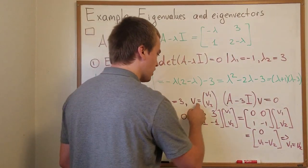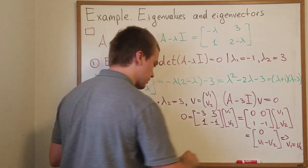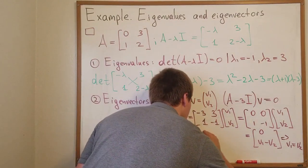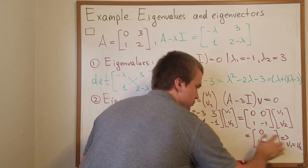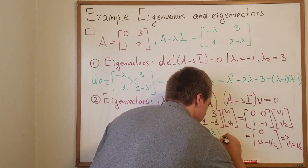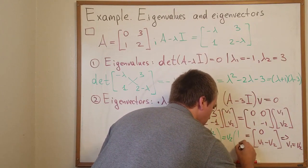So I know if v is inside my nullity that v has the following form. Since v1 equals to v2 I have v2, v2. So it's equals v2 times 1, 1.